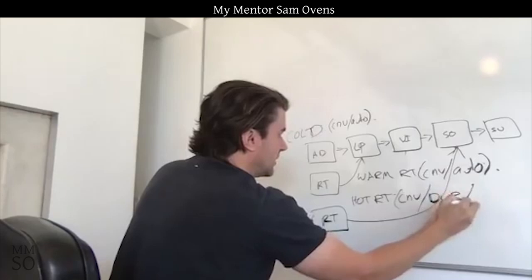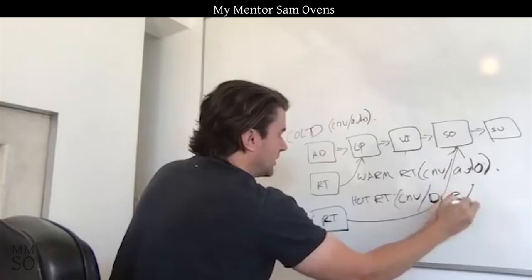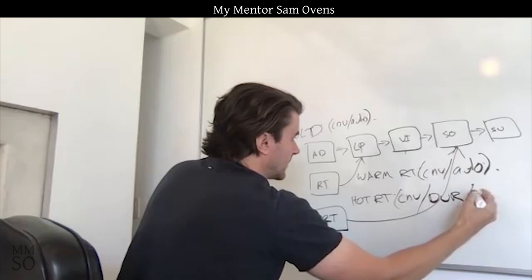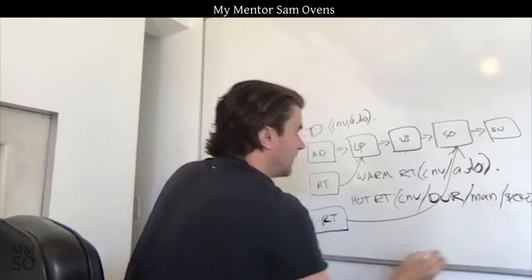The campaign level would be optimized for conversions, but you would do the ad set level at daily unique reach. And then instead of auto bid, you would do manual bid at $240 per 1000 impressions.